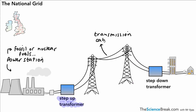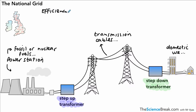These are the cables you've likely seen around the place — they can be above ground or sometimes below ground. That leads to a step-down transformer, which brings down the potential difference or voltage to what can be used domestically in our homes. These are the key parts of the National Grid, and we need to be able to talk about how it works efficiently.